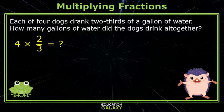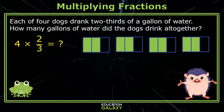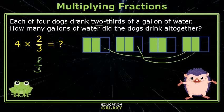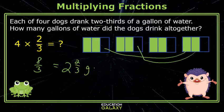Each of four dogs drink 2 thirds of a gallon of water. How many gallons of water did the dogs drink all together? Here's a model. Well, you can count from the model and see that it's 8 thirds. I could also merge these together and it would make 2 whole gallons and 2 thirds of another gallon. 2 and 2 thirds. Great, Freddie.